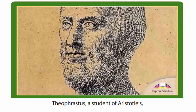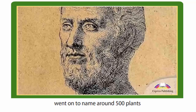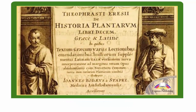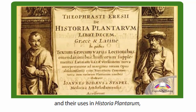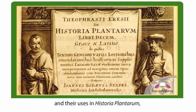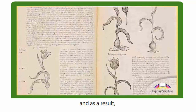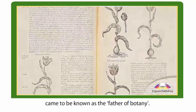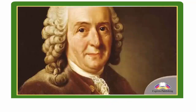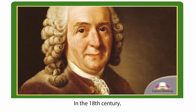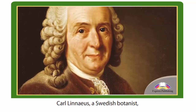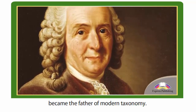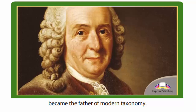Theophrastus, a student of Aristotle's, went on to name around 500 plants and their uses in Historia plantarum, and as a result came to be known as the father of botany. In the 18th century, Carl Linnaeus, a Swedish botanist, became the father of modern taxonomy.